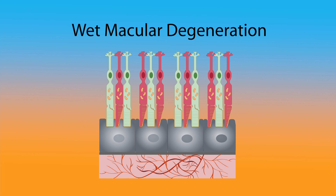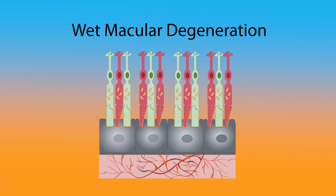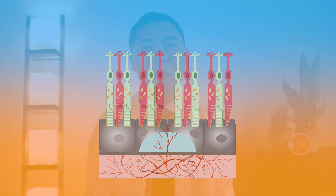In wet macular degeneration, abnormal blood vessels grow into the macula. These blood vessels are leaky and can leak fluid and blood into the retina, causing distortion of vision. Most patients, about 85%, have the dry form of AMD. However, 15% can progress to the wet form.